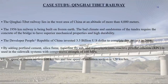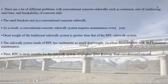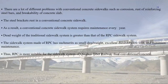The line speed of the frozen section is 100 km/h and the line speed of the unfrozen section is 120 km/h. There are many problems with conventional concrete sidewalks such as corrosion, rust of reinforcing steel bars, and breakability of concrete. The steel bracket rust in conventional concrete sidewalks requires high maintenance every year. Dead weight of the traditional sidewalk system is greater than that of the RPC sidewalk system. The sidewalk system made of RPC has the merits of small dead weight, excellent durability, low cost and minimum maintenance. Thus, RPC is more suitable for the sidewalk system of the Qinghai-Tibet Railway than conventional concrete.